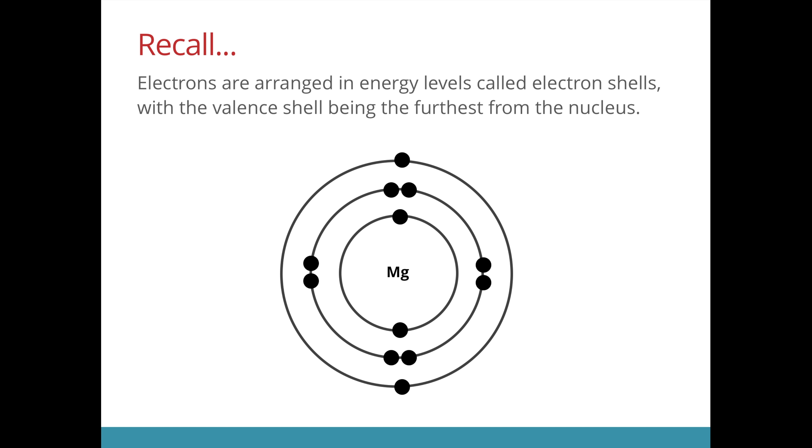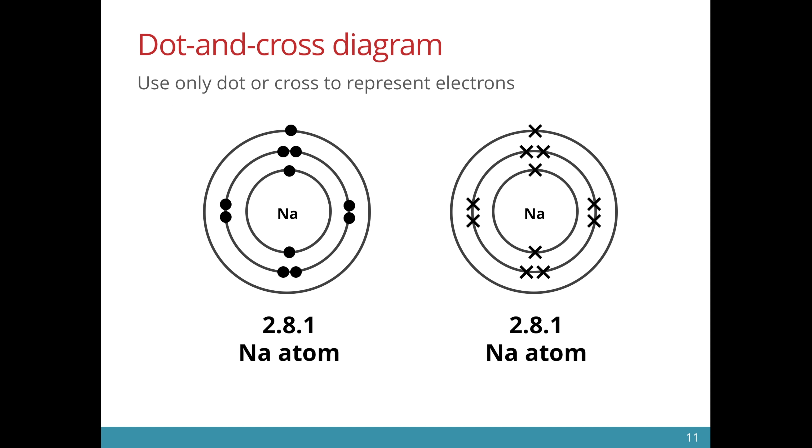Let's recall that electrons are arranged in energy levels called electron shells, with the valence shell being furthest from the nucleus. We use dot and cross diagrams to represent the arrangement of electrons in an atom, molecule, or an ion.